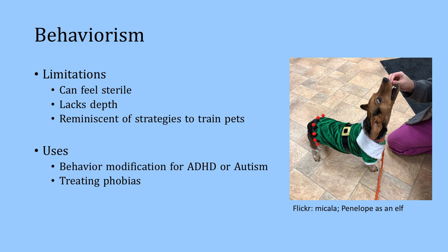That makes sense because on the most basic level, Pavlov, Watson, and Skinner's work was used to demonstrate the way that animals and people learn or can be conditioned through pairing experiences and through reinforcement. On the other hand, behavioral strategies can be particularly useful in combination with cognitive approaches and also with some specific presenting concerns. For example, counselors might use behavior modification strategies with families of children who have been diagnosed with ADHD or autism, and they might use behavior therapy principles in an effort to address certain kinds of phobias.